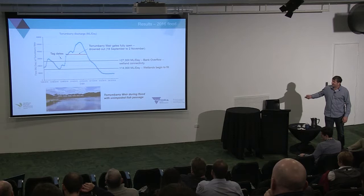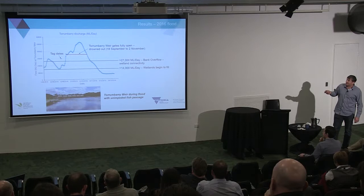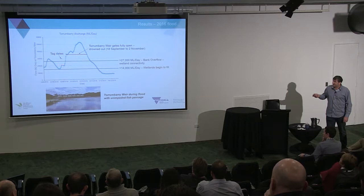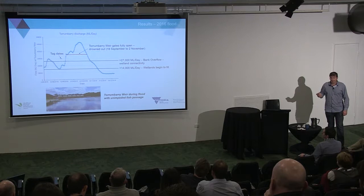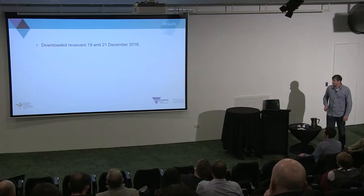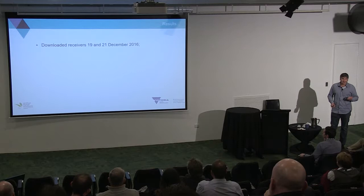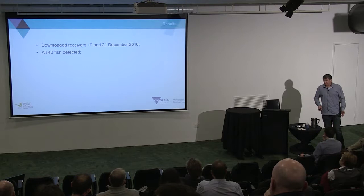This is a hydrograph showing the size of the flood and timing around what we did. In August there was a preceding flood that went into the Gunbower Forest, but hadn't reached Chinaman's Bend before our work. We put the tags in around the 15th of September. During the major height of the flood, the Torrumbarry Weir gates were open, which means there was unimpeded fish passage during that time. We downloaded receivers in early December — so it's really only a snapshot of just prior to, during, and immediately after the flood.